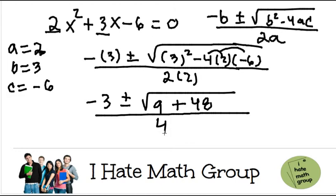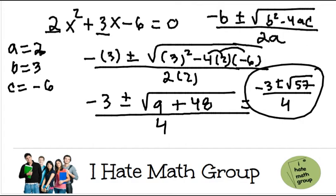2 times 2 is just equals to 4. Now we need to go ahead and do 9 plus 48, which that's going to be 57. So I'm going to have negative 3 plus and minus the square root of 57 all over 4. And voila, those are my answers.